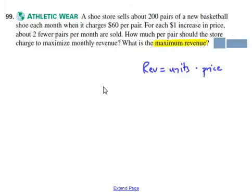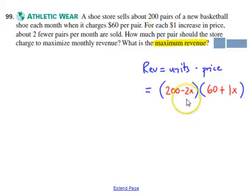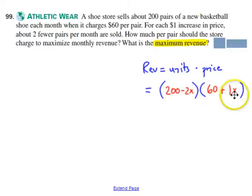You're looking for maximum revenue. Revenue is equal to units times price — how many shoes you sell times the price of those shoes. Like example 8, you need to plug the values you have into the equation. For units, you sell 200 pairs and every time you increase the price, you reduce the number of pairs by 2. For price, you start off at $60, and every time you increase the price you increase it by $1. That's the reason for (60 + 1x) as well as the binomial on the left.